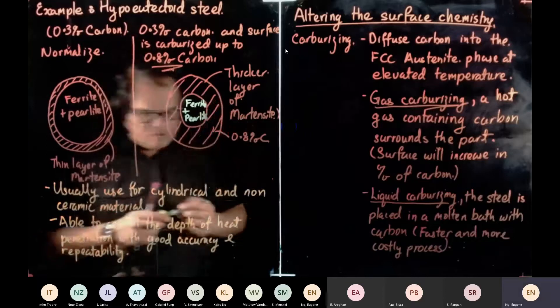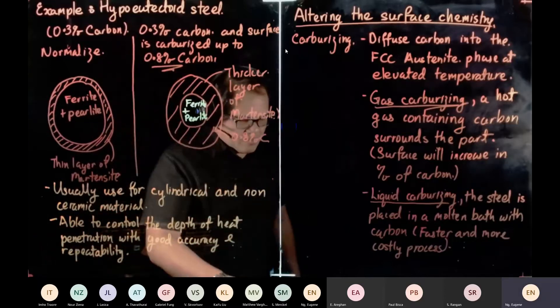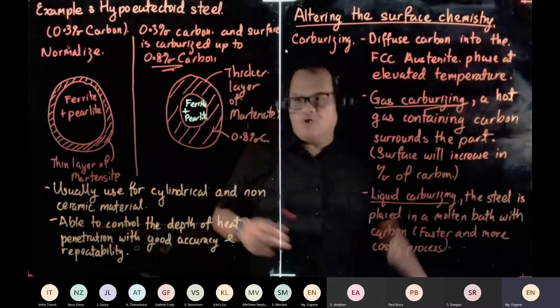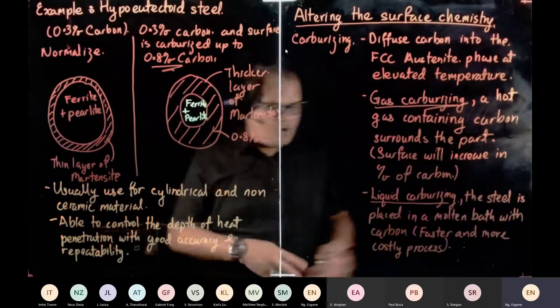Because you did carburizing. And then at the core, we still have ferrite plus pearlite. You don't need to change. I mean, you still want ferrite pearlite. Now, why 0.8% is a good percentage. Can anyone tell me why? Usually people, when they carburize steel, they like to carburize at 0.77% to 0.83%. Any idea why?